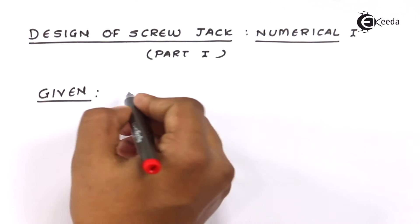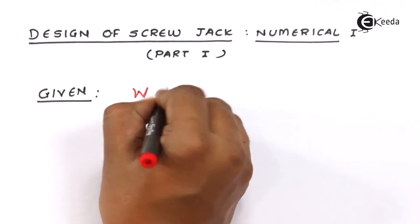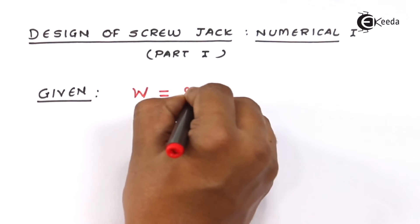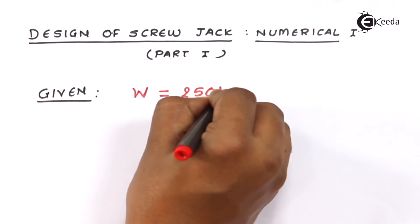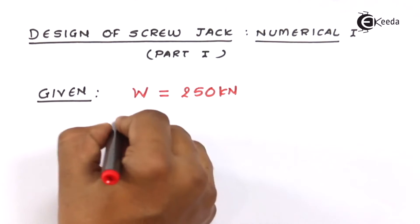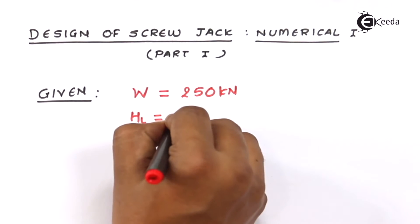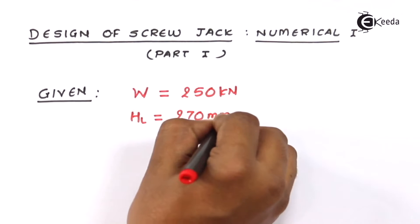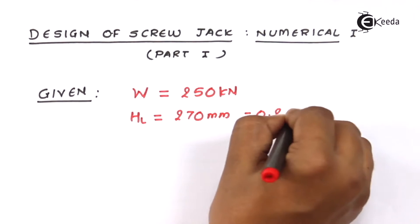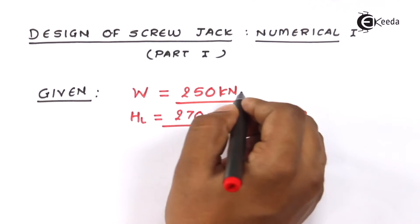So the given data is: the weight or load — you can see it written as W or P — is 250 kilo Newton, and the lifting height is given as 270 millimeter. In some cases it can be taken in meters as well, but we will prefer millimeters here.